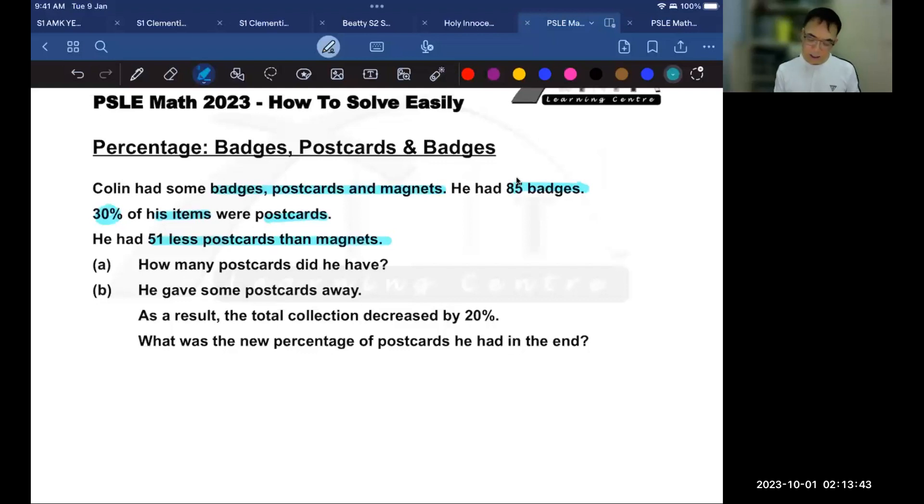He had 51 less postcards than magnets. So the first question is asking, how many postcards does he have? And in the second question, they give you further clues by saying that he gave away some postcards. Now, notice that he did not give away other items. As a result of giving away the postcards, the total collection of all his items will decrease by 20%. The question is, what is the new percentage of postcards in the end?